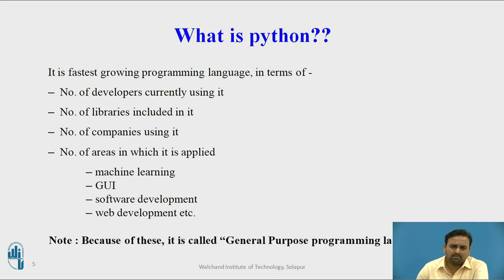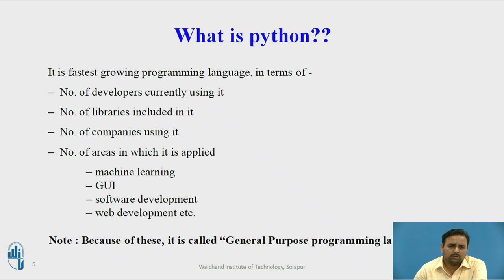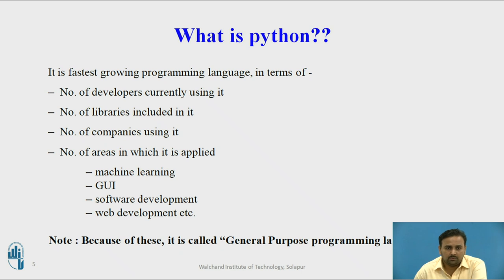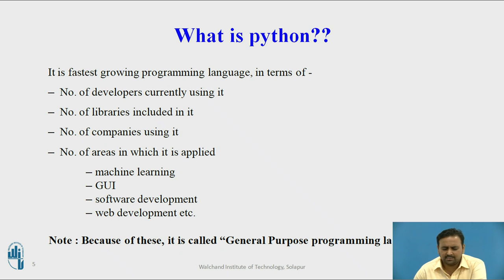The first question in our mind is: what is Python and why is it growing so fast? Python is the fastest growing programming language. The reason is that the number of developers in MNCs currently using it is increasing rapidly. Most developers are switching to Python for their convenience.